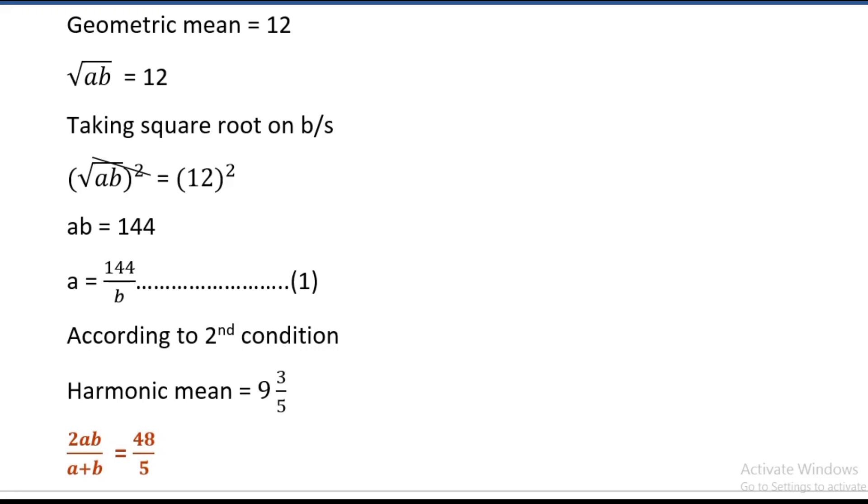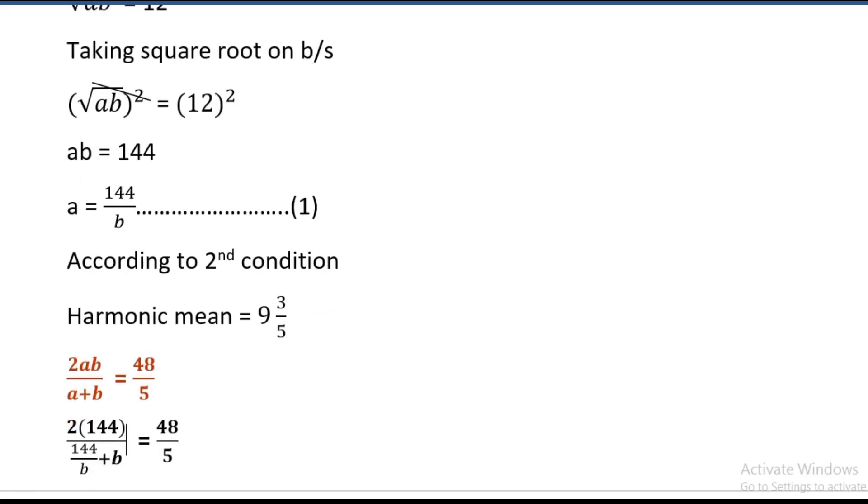Harmonic mean formula is 2ab divided by a plus b equals 48 divided by 5. Value of ab is 144, so 2 times 144 divided by, value of a is 144 divided by b plus b, equals 48 divided by 5.